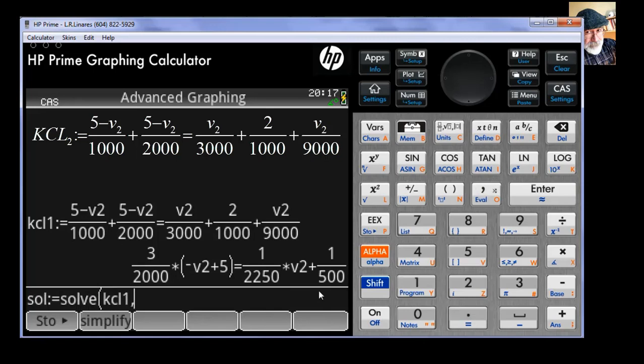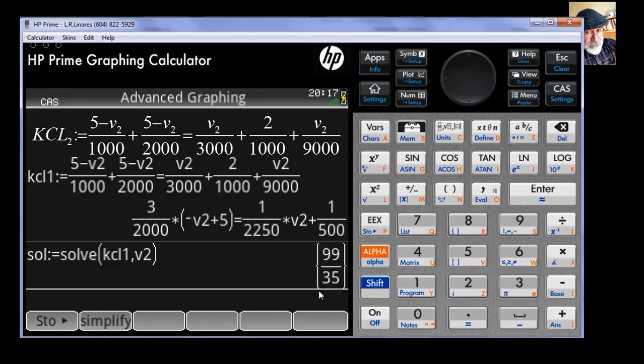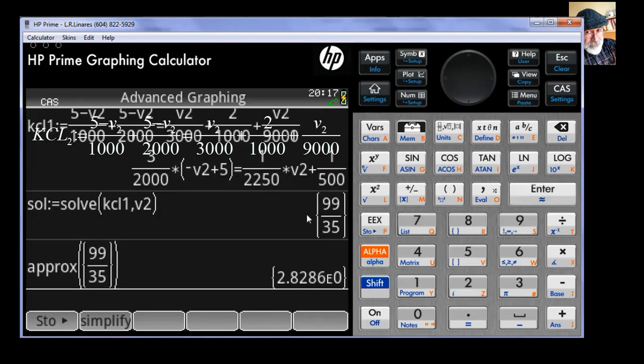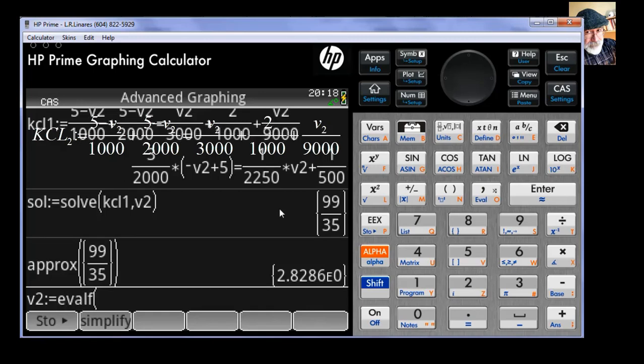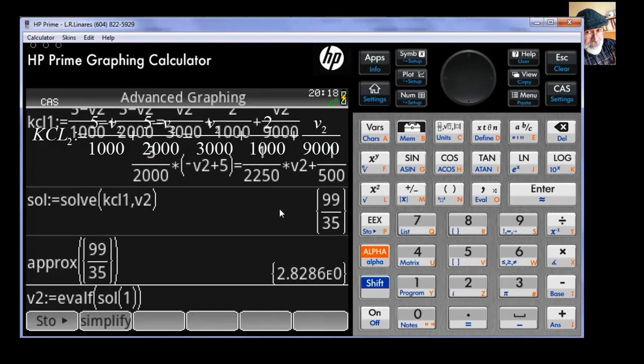Once we have that equation defined as KCL1, we can solve it with the Solve functionality of the CAS mode. We can solve it with the name Solve. You could have called that my solution or whatever. Solve the equation KCL1 for variable v2. Give an approximate value of that. With Shift, Enter, you approximate that. Or better, let me put in a variable v2. So let me define a variable v2, colon equal definition, with the evaluation in floating point of the first term inside the list Solve. And that way, we have a variable that has the voltage V2, 2.83 volts.